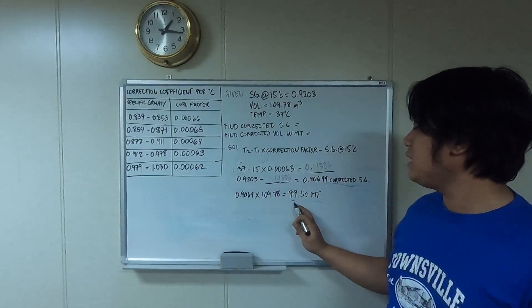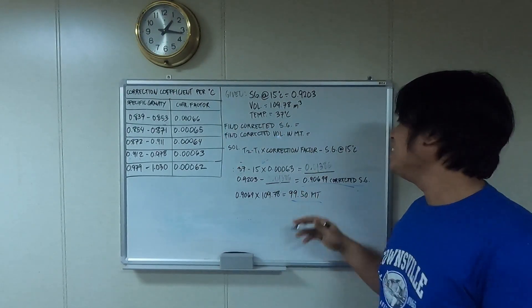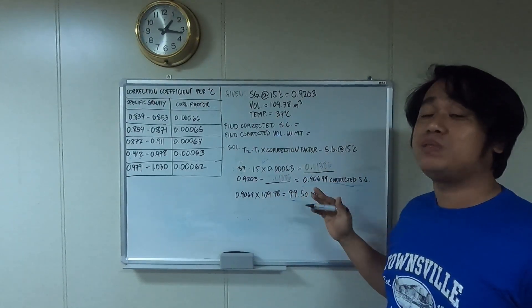Now we're going to find out why this 99.50 metric tons becomes 99.50 metric tons.